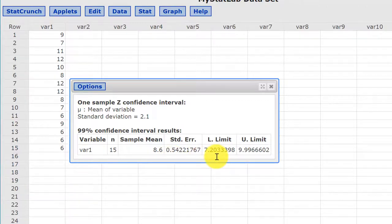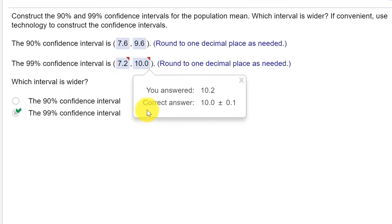And now we've got 0.54 still for the standard error—that doesn't change—but our lower limit is 7.2, rounding to one decimal, and the upper limit rounds to 10.0. And if we look over here, we have the right answer there.